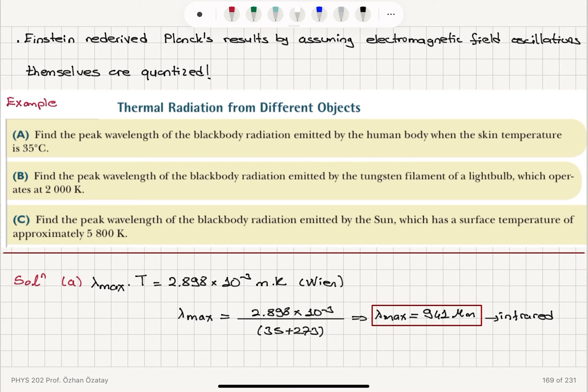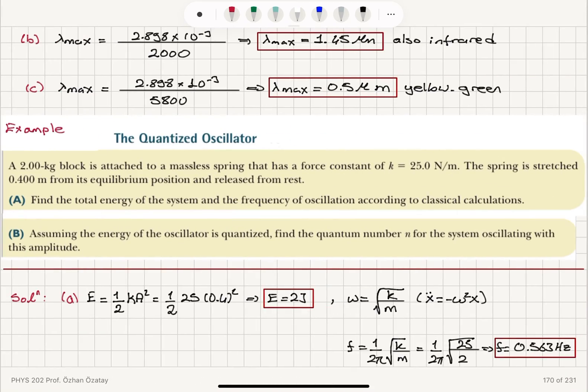We gave two examples for blackbody radiation. We calculate the peak wavelength of blackbody radiation using Wien's displacement law. Lambda max times t equals 2.898 times 10 to minus 3 meters Kelvin. We find that for the human body, lambda max is 941 micrometers, which is in infrared. For a tungsten filament operating at 2000 Kelvin, it's 1.45 micrometers, also infrared. And for the surface of the sun, it's 0.5 micrometers, which is yellowish green.